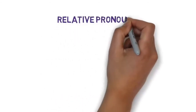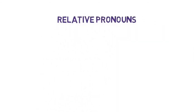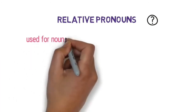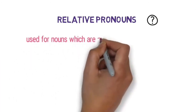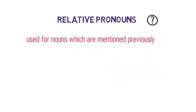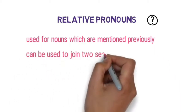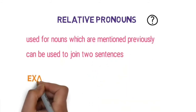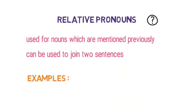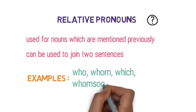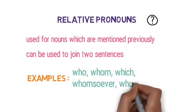We are moving to the relative pronouns. Relative pronouns refer to nouns which are mentioned previously. It can be a place, person, thing, or idea. They are also used to join two sentences. Examples include: who, whom, which, whoever, whose.